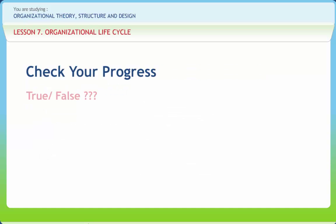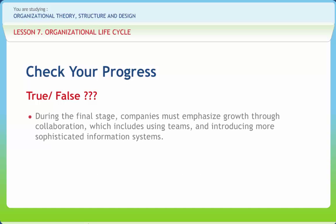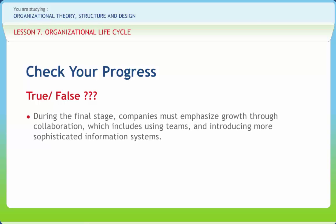If you have understood the various concepts discussed in this lesson clearly: During the final stage, companies must emphasize growth through collaboration, which includes using teams and introducing more sophisticated information systems. Right or Wrong? Right.